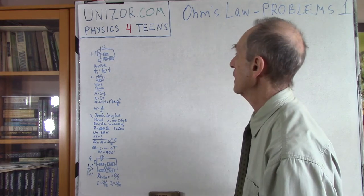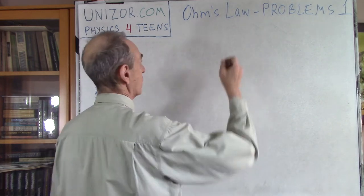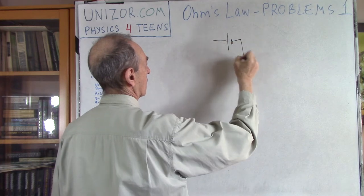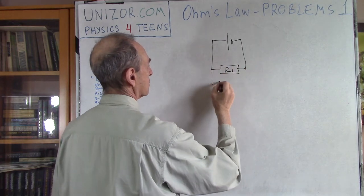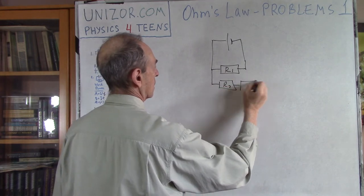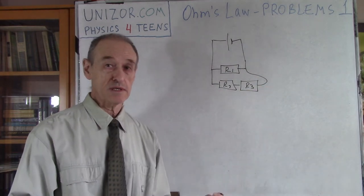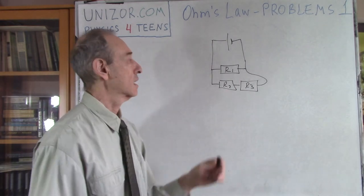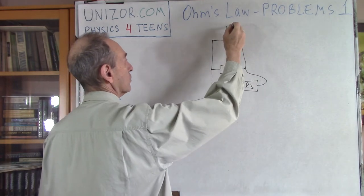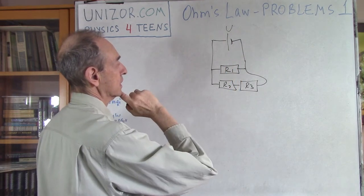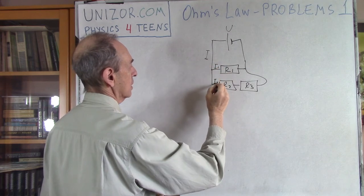Let's talk about the problems. The first one is probably the simplest and most classical one. You have a circuit with a combination of parallel and sequential series connections. These are resistors in series with given resistances. This is a resistor which is in parallel to that series. What's given is the voltage on the battery, and you have to determine the current in each branch of the circuit.